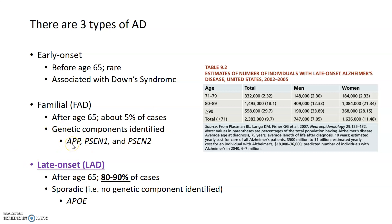Mutations in the amyloid precursor protein, or APP, as well as mutations in presenilin 1 and 2 have been linked to Alzheimer's disease. What's interesting about this is that genetic mouse models for Alzheimer's disease actually include mutations in all three of these individual genes to make that transgenic Alzheimer's model and make it as accurate as possible.